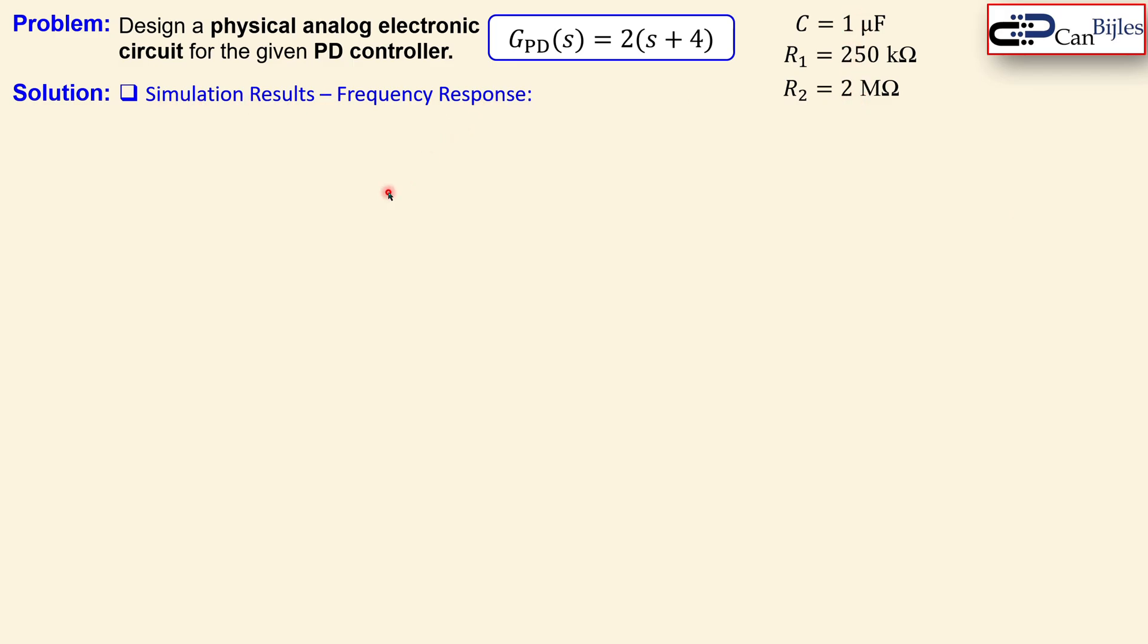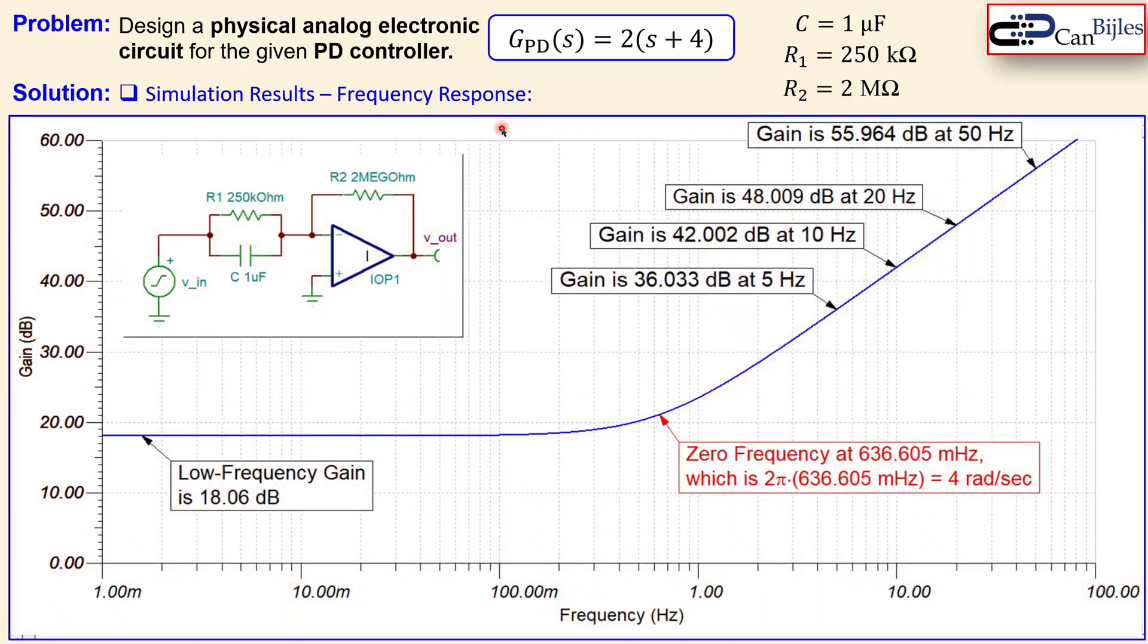We have all the values here in the summary. Now we look at the simulation results and the frequency response. This is the frequency response. You can see the circuit again here. This is the circuit we have drawn in the simulator. And the blue line is our gain response. This is the gain in dBs. And this is the frequency in hertz from 1 millihertz all the way to 100 hertz plotted here. You see several things here. So let me go one by one.